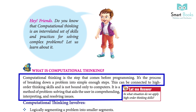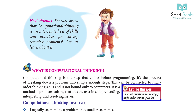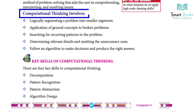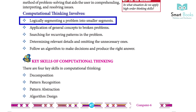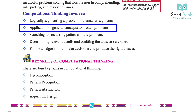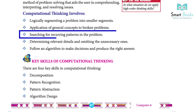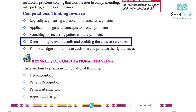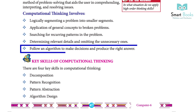Computational thinking is a method of problem solving that aids the user in comprehending, interpreting, and resolving issues. In what situations do we apply higher-order thinking skills? Computational thinking involves logical segmenting of a problem into smaller segments, application of general concepts to broken problems, searching for recurring patterns in the problem, determining relevant details and omitting the unnecessary ones.